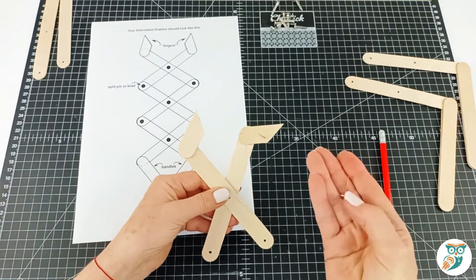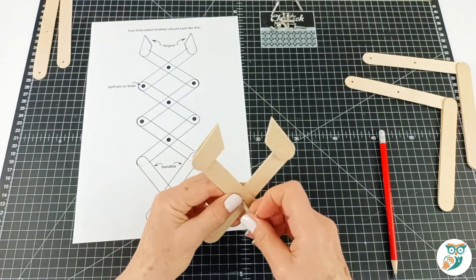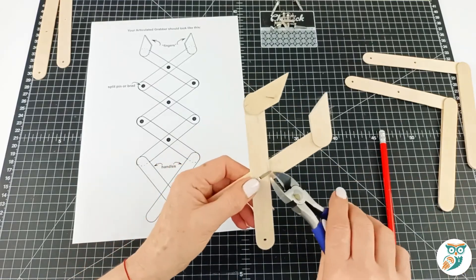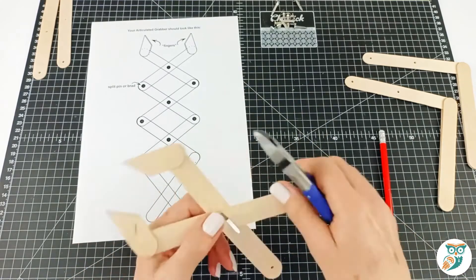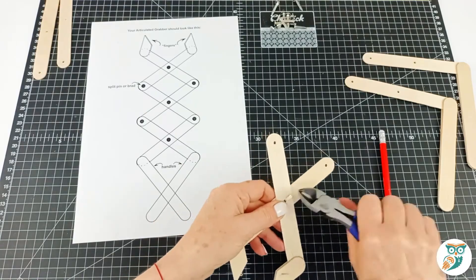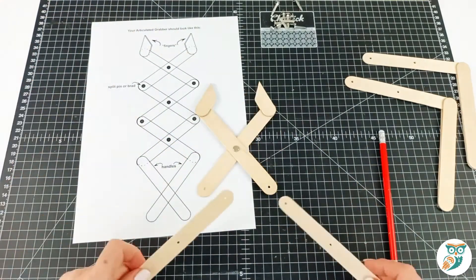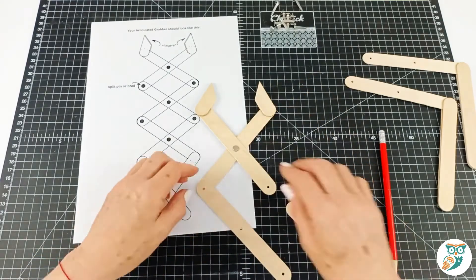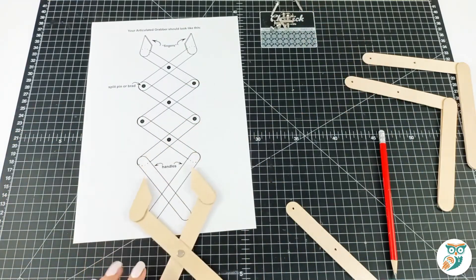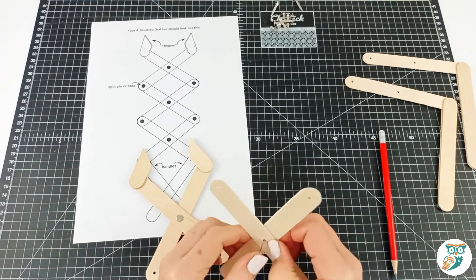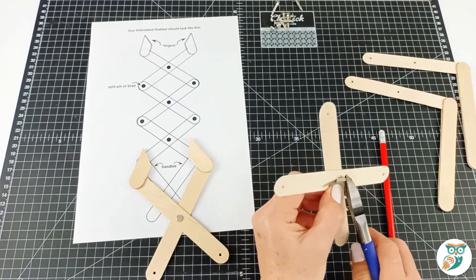And for this we're going to use split pins as these are all of our hinge points that are going to move as we use our trash grabber. This is really easy to do. You simply push the push pins through and then trim the ends. And we're just using a side cutter to trim those ends really easily. And again, if that is a little advanced for the level of your students, you could pre-trim your push pins or you might even be able to find some that have slightly shorter legs.